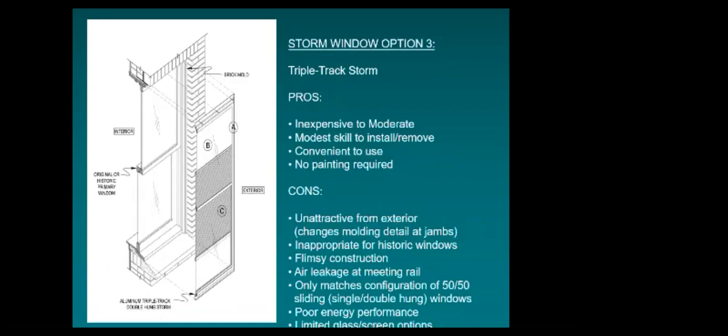Triple-track storms became very popular in the 1960s and are usually long worn out by the time we arrive for window restoration work. Higher quality aluminum triple-track storms are made today, and can be a less expensive option when historic character of the window is not critical to the design of the house.